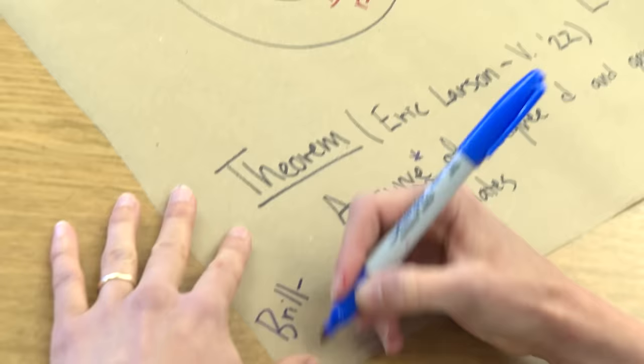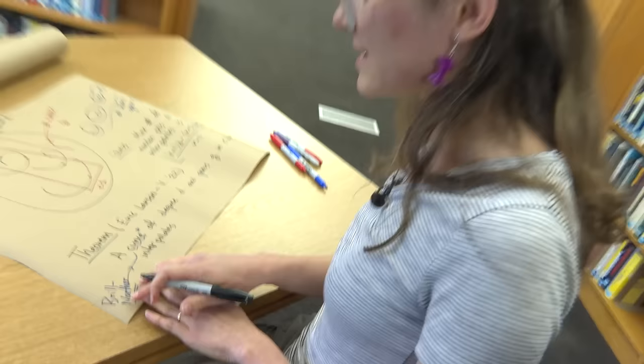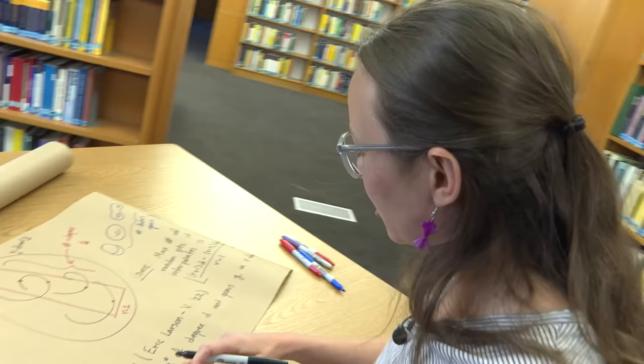I need to actually restrict to Brill-Noether curves. So these are curves that, in some sense, there's nothing special about them as an abstract curve. A little caveat, but it's the natural class of curves that you would consider as an algebraic geometer.